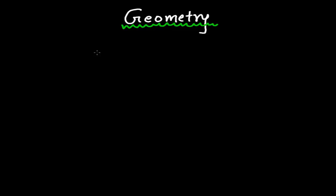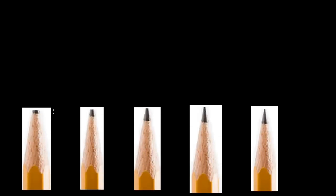I want to start geometry from a point. What is a point exactly? To get a good concept of point, suppose I have some pencils of different sizes and different sharpness. This first pencil is much more blunt. The second pencil is sharper than the first one, and the third pencil is sharper than the second one.